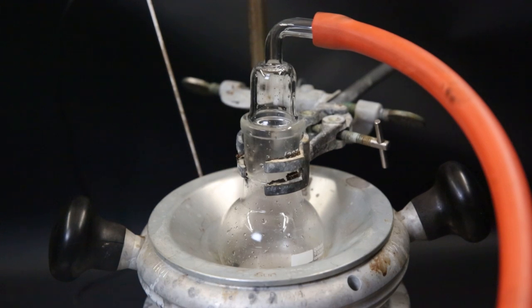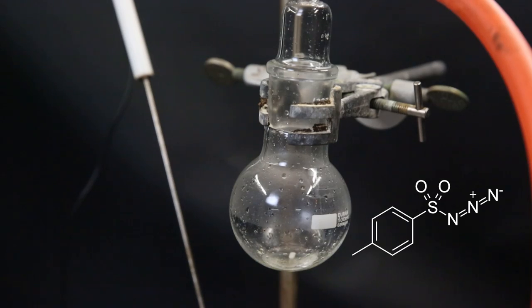After a while, all of the ether is gone and I am left with a clear liquid at the bottom of the flask, which should be the pure azide.